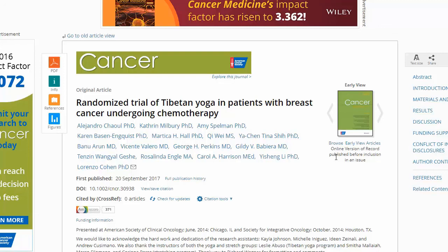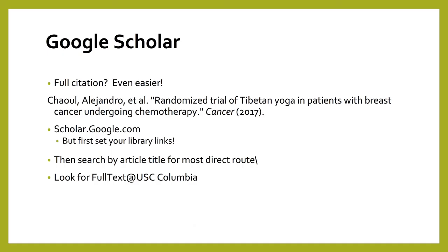So this should help you with getting to that publisher's page or vendor page that has the holdings, searching within with whatever clues you have, or if there is a particular volume and issue, you would be able to browse based on time. In cases where you have a full citation, tracking down a source is even easier with the help of Google Scholar. If you have a full citation, you can take that and go to scholar.google.com. But first you'll need to set your library links, then search by article title for the most direct route, and then look for the full text at USC.